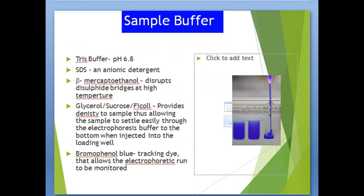The sample buffer contains Tris buffer at pH 6.8 and SDS. Beta-mercaptoethanol disrupts the disulfide bridges at high temperature. Glycerol, sucrose, or Ficoll provides density to the sample, allowing it to settle easily through the electrophoresis buffer to the bottom when injected into the loading well. Bromophenol blue is a tracking dye that allows the electrophoretic run to be monitored.